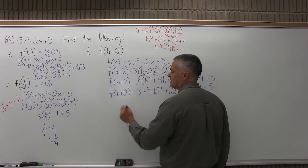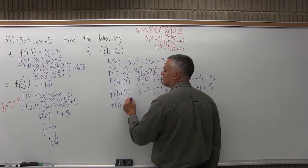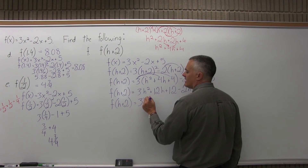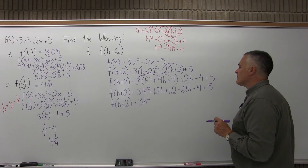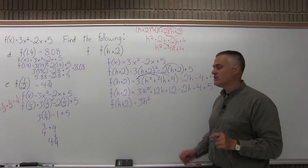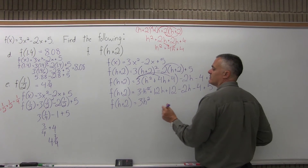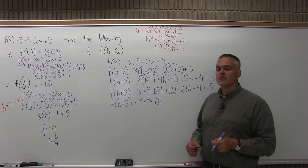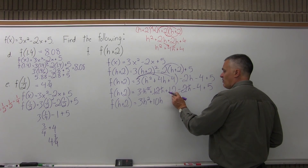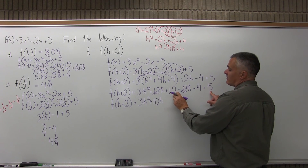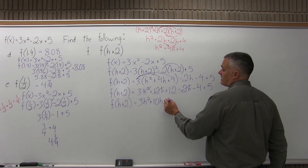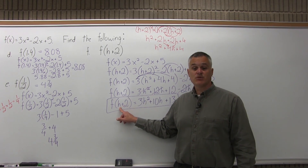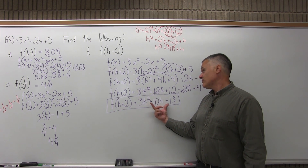Now distribute the 3: 3 times h squared is 3h squared, 3 times 4h is 12h, 3 times 4 is 12. From the rest: minus 2h, minus 4, plus 5. Combine like terms: 3h squared stays. For h terms: 12h minus 2h is 10h. For constants: 12 minus 4 plus 5 is 13. So f of h plus 2 equals 3h squared plus 10h plus 13.